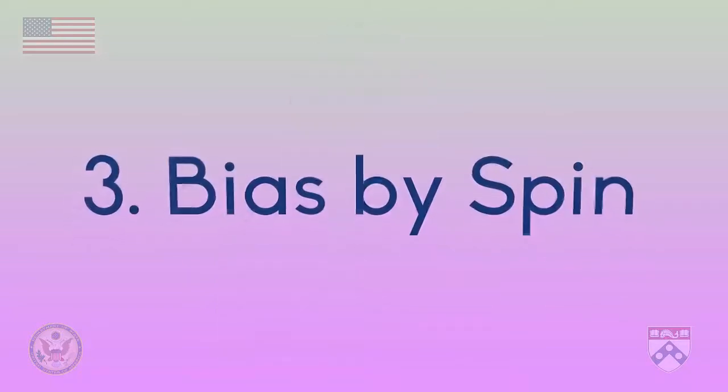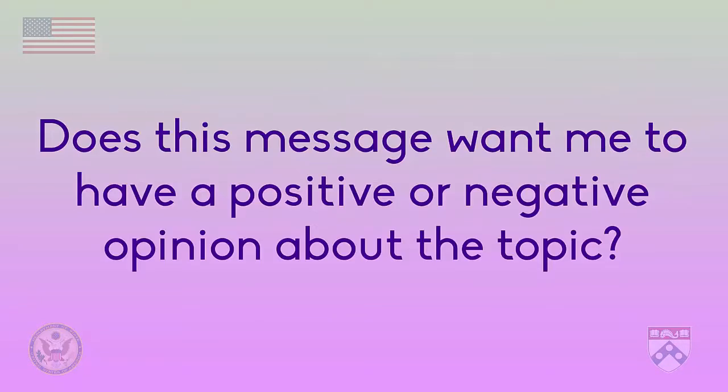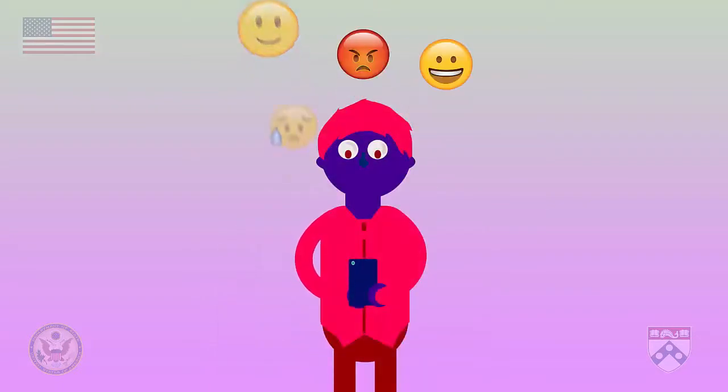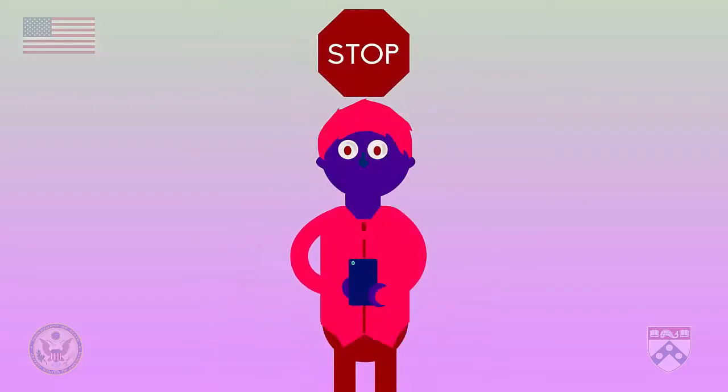Finally, if you suspect that a media message is using bias by spin, you should try to answer this media literacy question: Does this message want me to have a positive or negative opinion about the topic? We want to see objective language, which is based on facts, not opinions. If a media message doesn't use neutral connotations, or if it seems to be saying you should feel a certain way, then you should stop for a moment to think.